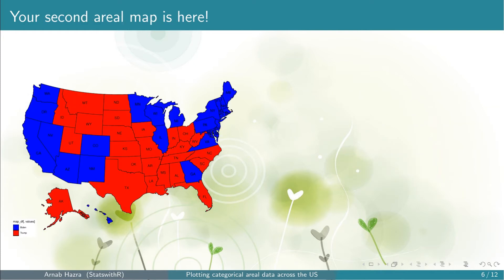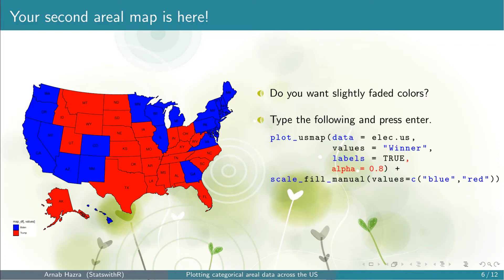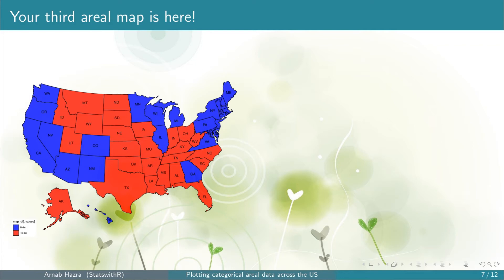You get your second aerial map. You can see that the map is now in blue and red. Next, note that the blue and red colors are too dark. You might be interested to fade both the colors slightly. To do that, add alpha equals to 0.8 within plot_usmap. If you want the colors to be more faded, use a smaller value of alpha. The default is alpha equals to 1. Now press enter.